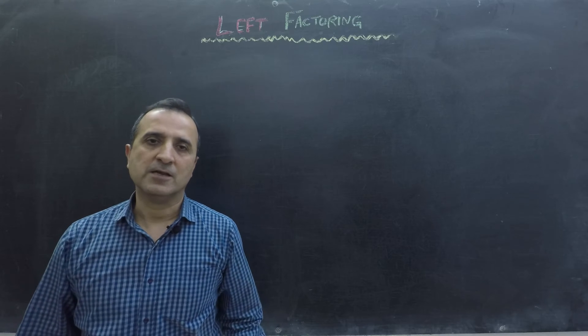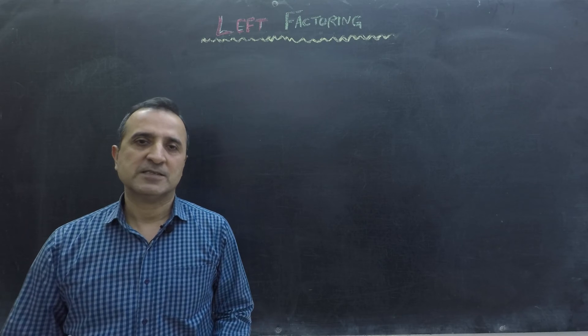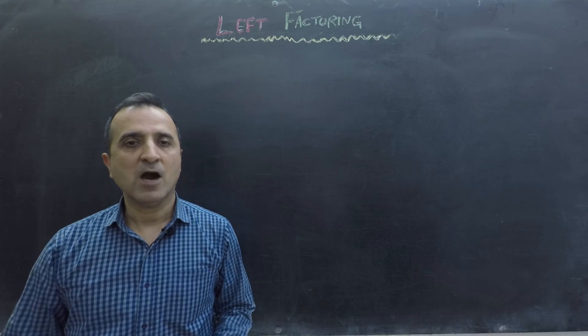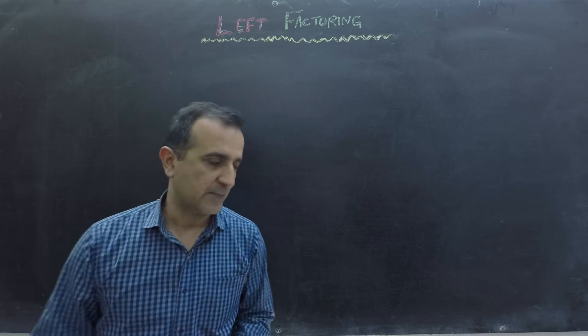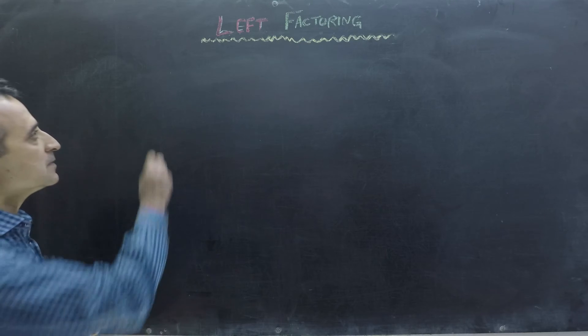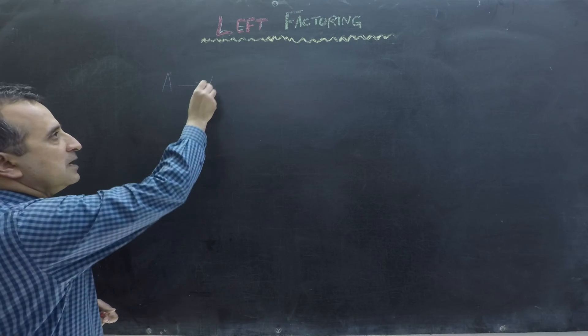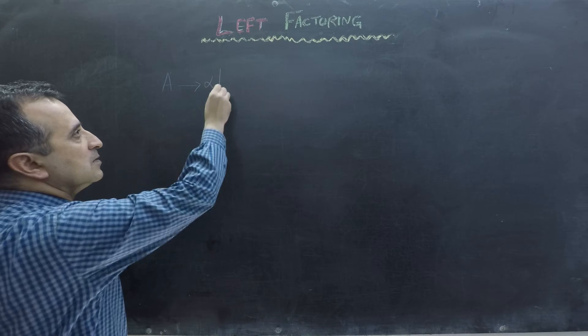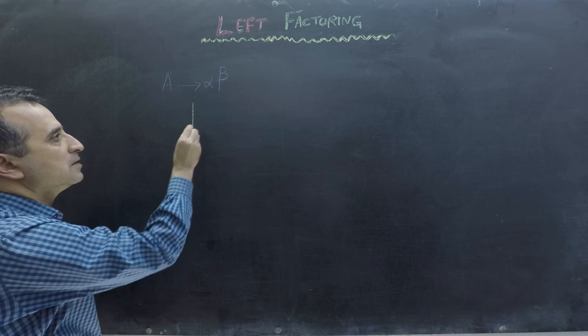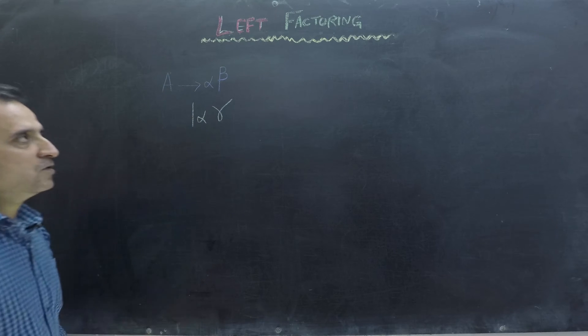Left factoring is a technique used to eliminate common prefixes. So why are common prefixes bad and how do we remove them? Let's see that. First, consider our context-free grammar: A goes to alpha beta or alpha gamma. Now this grammar has a common prefix alpha in two different productions.